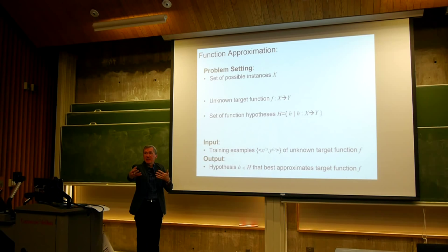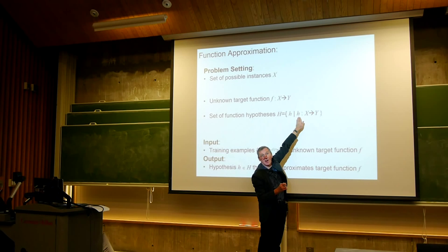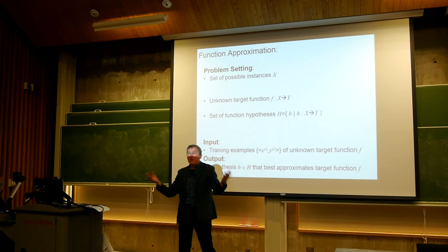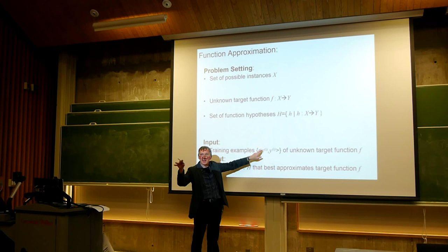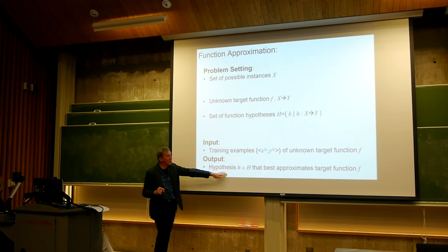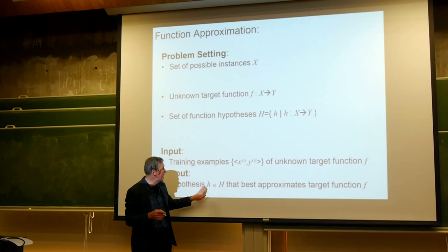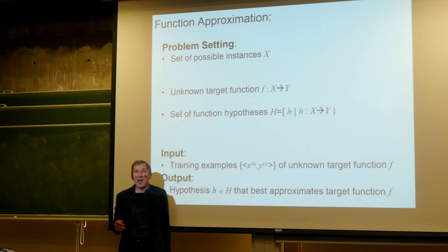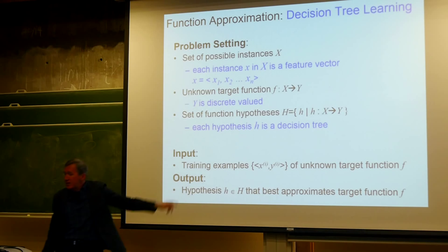In this setting, there are some set of instances the function can take as input, some unknown function, and the learner has some way of representing hypotheses — functions from X to Y. The input to the system is simply a set of training examples: XY pairs. The learning algorithm is expected to output the hypothesis that best approximates this unknown function by fitting this sample of inputs and outputs.